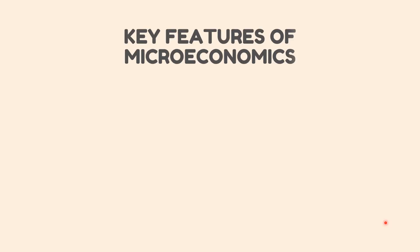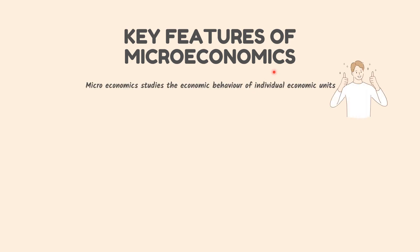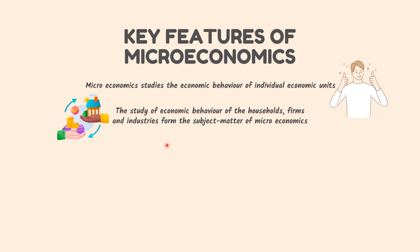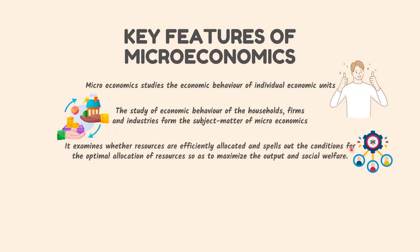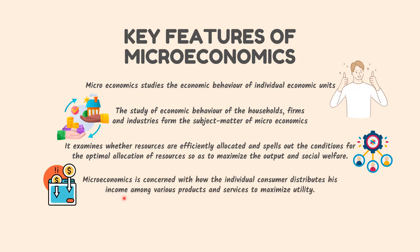Some key features of microeconomics are: Microeconomics studies the economic behavior of individual economic units. The study of economic behavior of households, firms, and industries forms the subject matter of microeconomics. It examines whether resources are efficiently allocated and spells out the conditions for the optimal allocation of resources so as to maximize output and social welfare. For example, microeconomics is concerned with how the individual consumer distributes his income among various products and services to maximize utility.